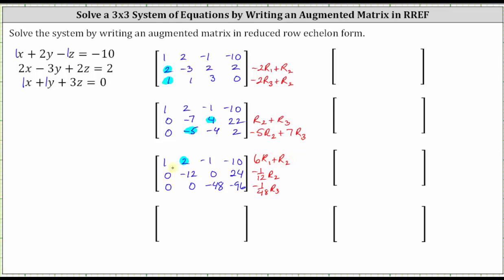Replacing row one with six times row one plus row two: six times one plus zero is six; six times two plus negative twelve is zero; six times negative one plus zero is negative six; six times negative ten plus twenty-four is negative thirty-six. Replacing row two with negative one-twelfth times row two gives us: zero, one, zero, negative two. Replacing row three with negative one-forty-eighth times row three gives us: zero, zero, one, two.